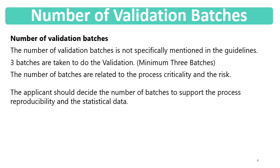Three batches are generally taken for validation. This number of batches requirement is not mentioned clearly or specifically in the guidelines, but the minimum requirement for the number of validation or exhibit batches is three. The number of batches is related to the process criticality and the risk. The applicant can go for more batches, but the minimum should be three. The applicant should decide the number of batches to support process reproducibility and statistical data, so that variability is absent and the process is consistent.